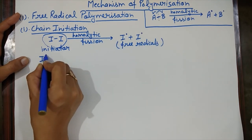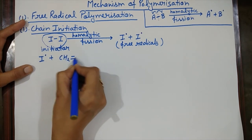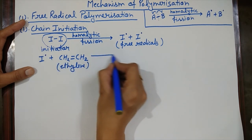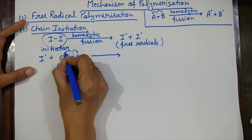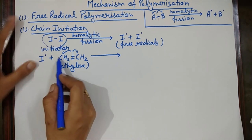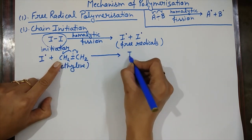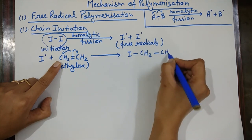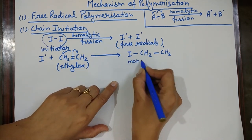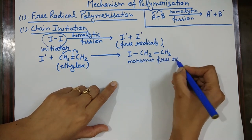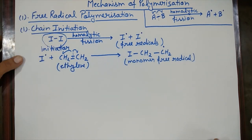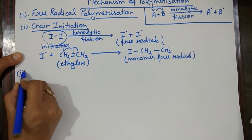This free radical then forms a bond with a monomer — ethylene. The pi bond of ethylene undergoes homolytic fission, giving one electron to bond with I• and creating a new free radical on the other carbon. We can write the structure as I–CH2–CH2•. This is the monomer free radical, completing chain initiation.